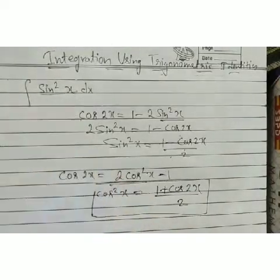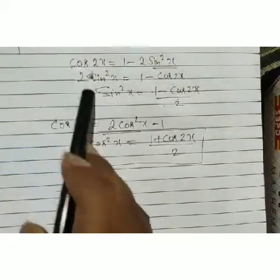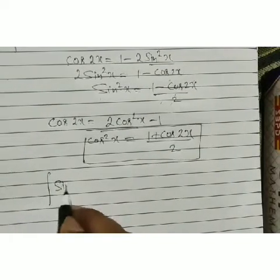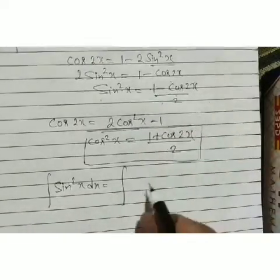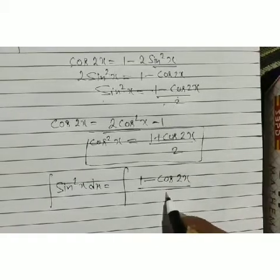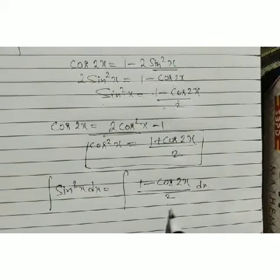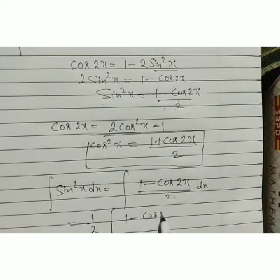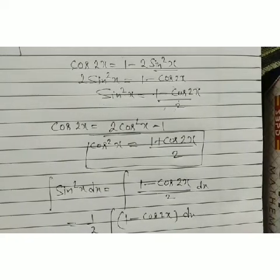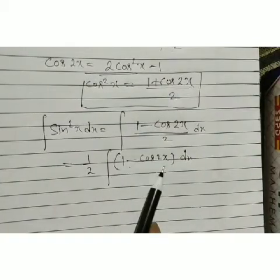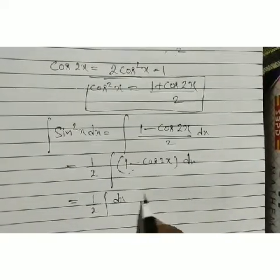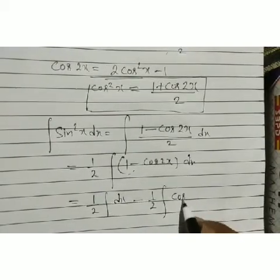Now we solve: find the integration of sin²x dx. By our identity, sin²x = (1 − cos 2x)/2. So we write ∫sin²x dx = ∫(1 − cos 2x)/2 dx. The 1/2 is a constant, so we take it outside the integral sign. We now have (1/2)∫(1 − cos 2x) dx, which splits into (1/2)∫1 dx − (1/2)∫cos 2x dx.